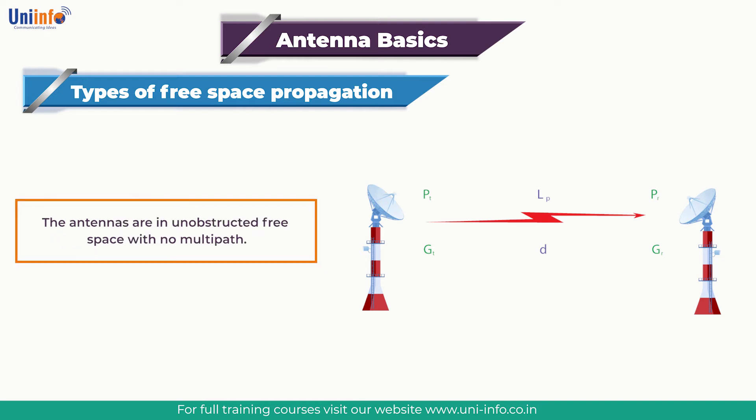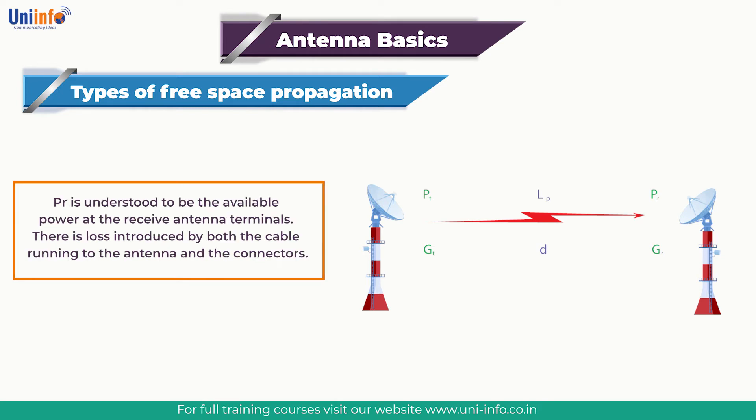First, the antennas are in unobstructed free space with no multipath. Second, PR is understood to be the available power at the receive antenna terminals. There is loss introduced by both the cable running to the antenna and the connectors. Furthermore, the power at the output of the antenna will only be fully delivered into the transmission line if the antenna and transmission line are conjugate matched.